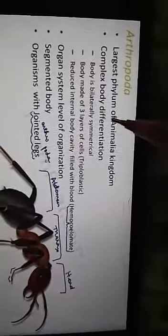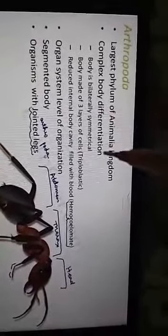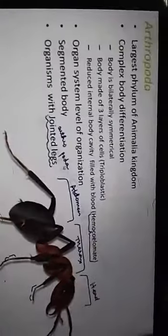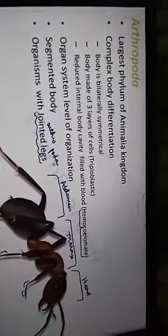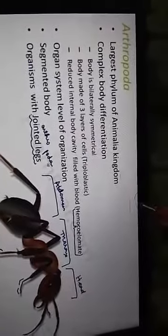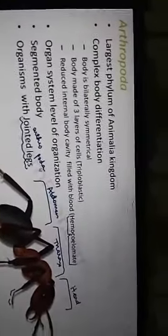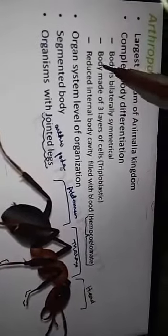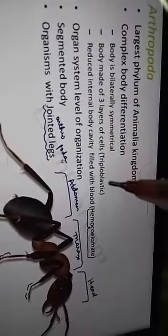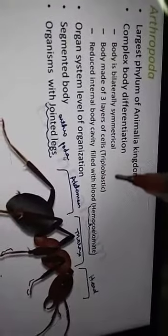The body is complex and well-differentiated. The body is bilaterally symmetrical — bilateral means if the animal is cut through the central axis, we get two identical halves. The body is made of three layers of cells: triploblastic — endoderm, ectoderm, and mesoderm.